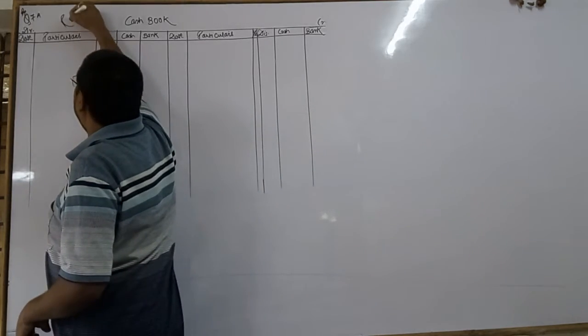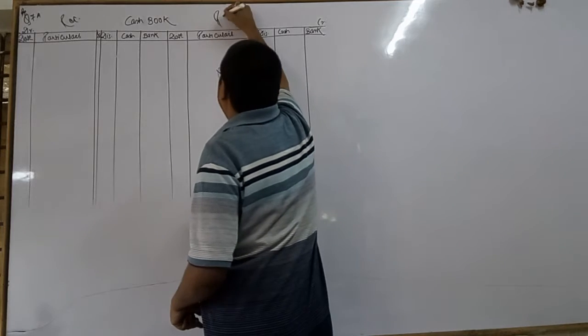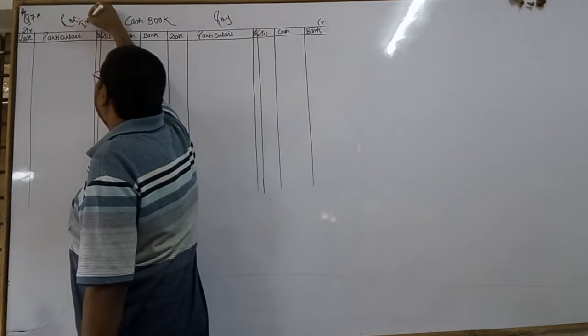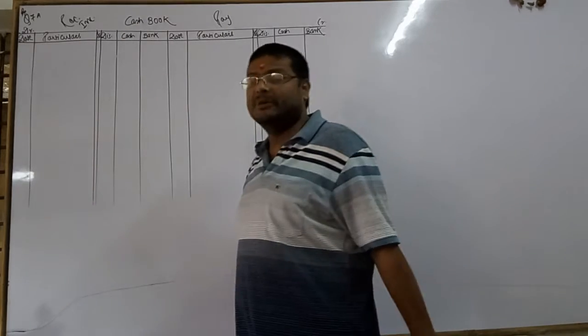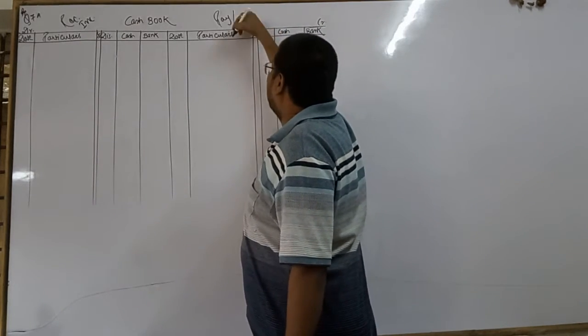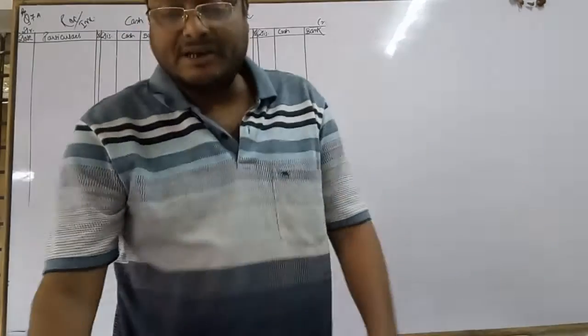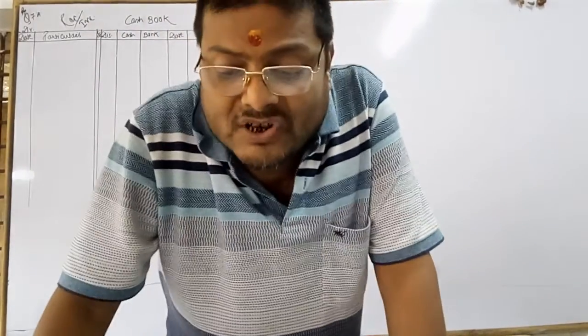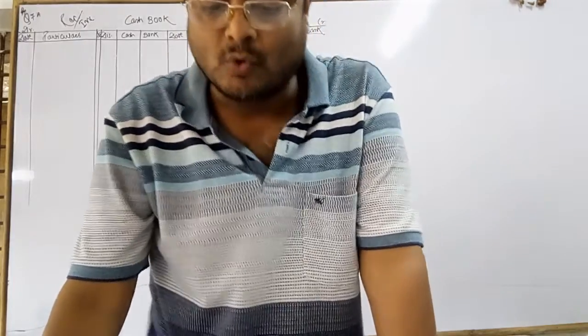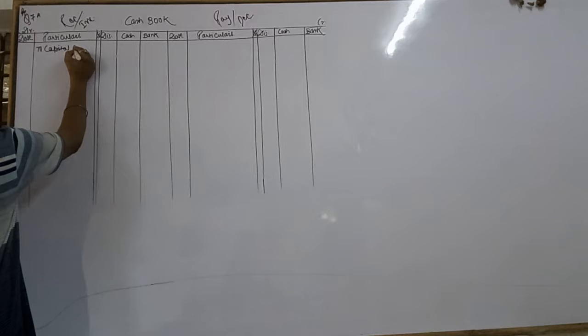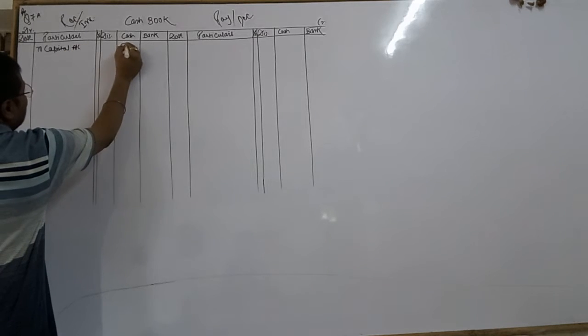All receipts are debited and all payments are credited. Increase in cash or bank balance are debited. Decrease in cash or bank balance are credited. Once again, I am going to repeat. Enter the following transaction in a 3 column cash book. Commenced business with cash rupees 50,000.